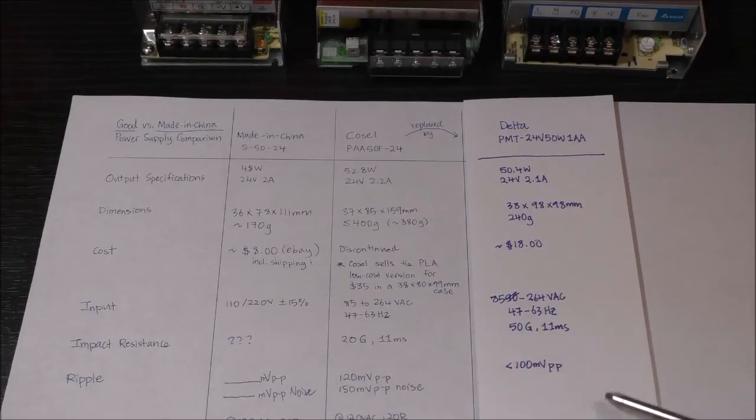Finally, the ripple is stated as less than 100 millivolts peak to peak, so we'll do a quick teardown, and after that we'll power up this Delta power supply and see if it meets its specifications.